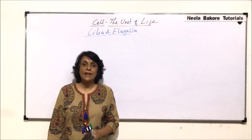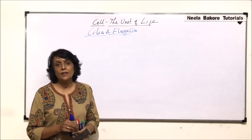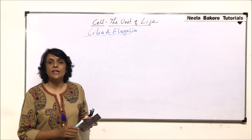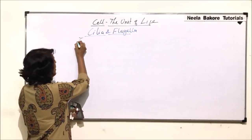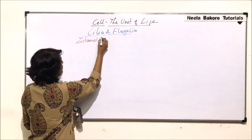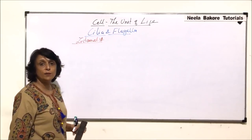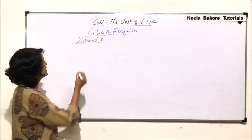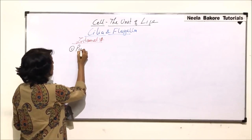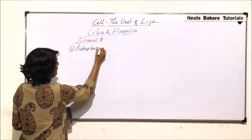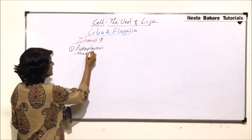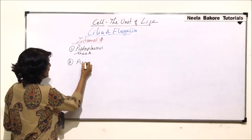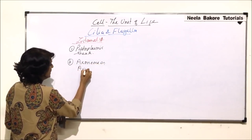In the previous part, we compared cilia and flagella on the basis of their size, function, and the type of movement they show. Here we are taking the internal structure, which is common. Each cilium or flagellum is made up of two main parts: one is a sheath known as the protoplasmic sheath, which is actually an extension of the plasma membrane, and the second part is known as the axoneme or axial filaments.